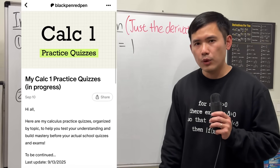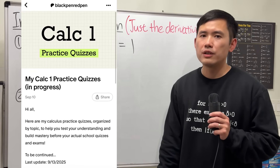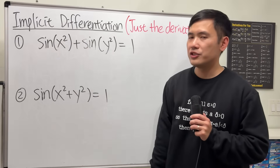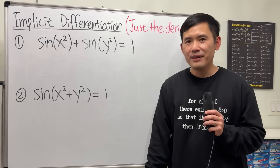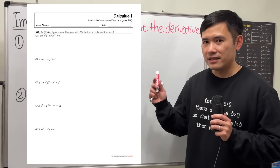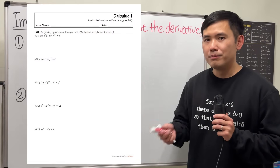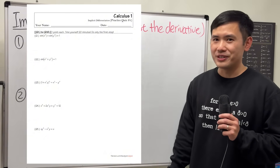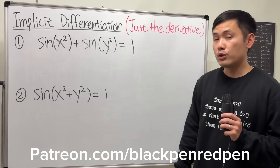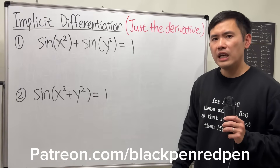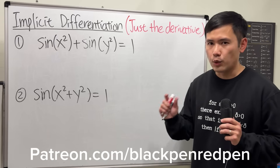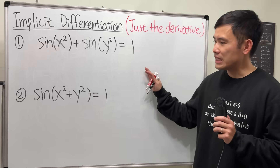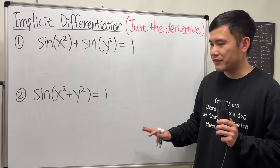I wanted to go over my calculus practice quiz from my Patreon on Implicit Differentiation. You guys can go down and find the file — the link is in the description. Make sure you try the questions first before you watch the solution. For this one, we have a total of 10 questions, and we'll just be focusing on taking the derivative. It's just the first step — we're not going to simplify anything after that.